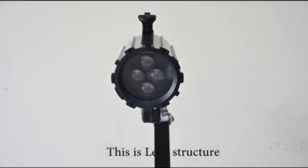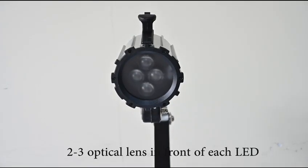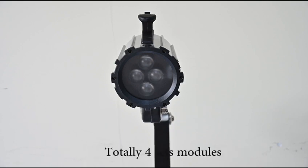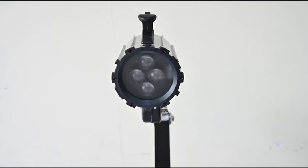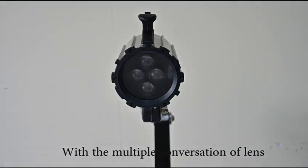This is the lens structure. There are two to three optical lenses in front of each LED, total four-size modules. We use optical lens with the multiple convection of the lens.